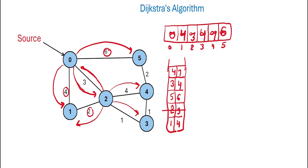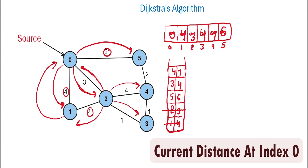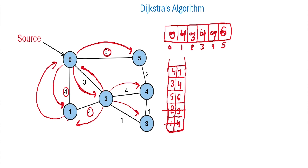From the priority queue we again pick the node with minimum distance. Nodes 3 and 1 both have minimum distances, so the priority queue provides node 1 first. From node 1, we can move to 2 and 0. Moving to 0 gives distance 8, which is more than current, so we ignore it. Moving to 2 gives distance 6, which is also more than the current distance of 3, so we ignore this as well.